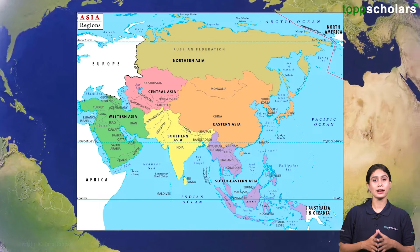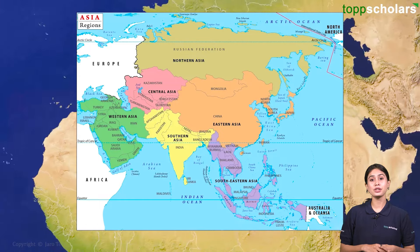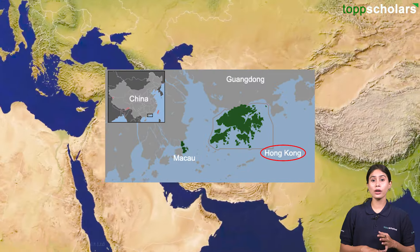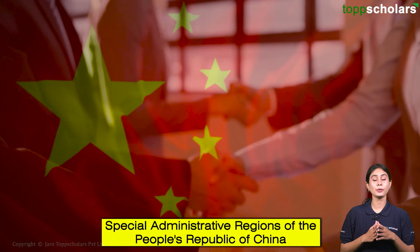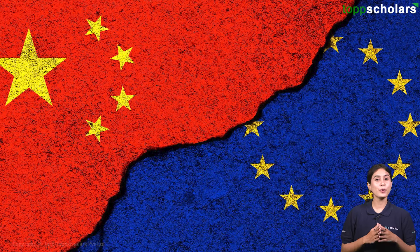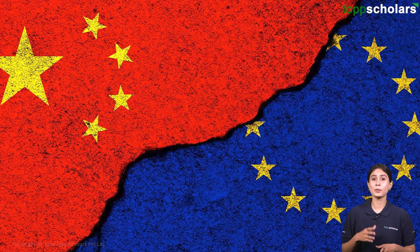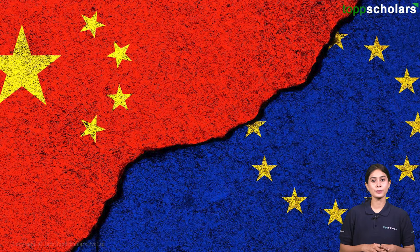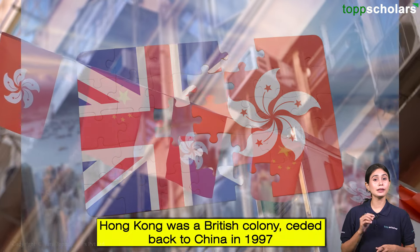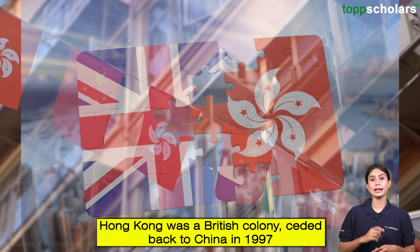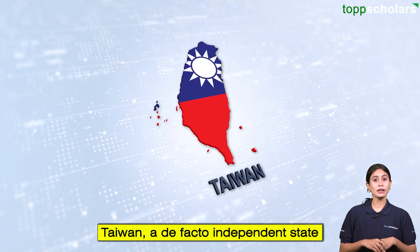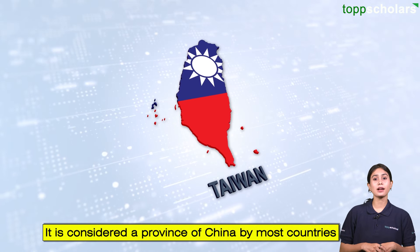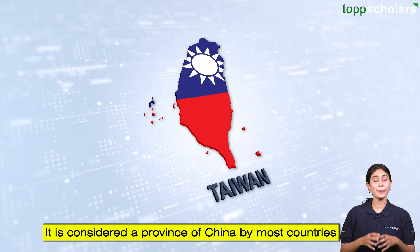Apart from Asia's 48 countries, three other Asian territories are Hong Kong, Macau, and Special Administrative Regions of the People's Republic of China, which were originally part of China but were taken by European powers. Hong Kong was a British colony, ceded back to China in 1997, and Macau was a Portuguese colony until 1999. Taiwan, a de facto independent state, is considered a province of China by most countries.